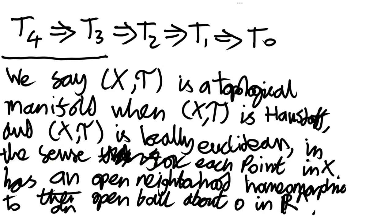So a topological manifold is Hausdorff and it has this property that every neighbourhood of every point looks like n-dimensional Euclidean space. This is the most stripped-down definition of a manifold. There are lots of extra things you might want to add, like insisting the space is connected, making it differentiable, or adding extra structure to make it into a Riemannian manifold.